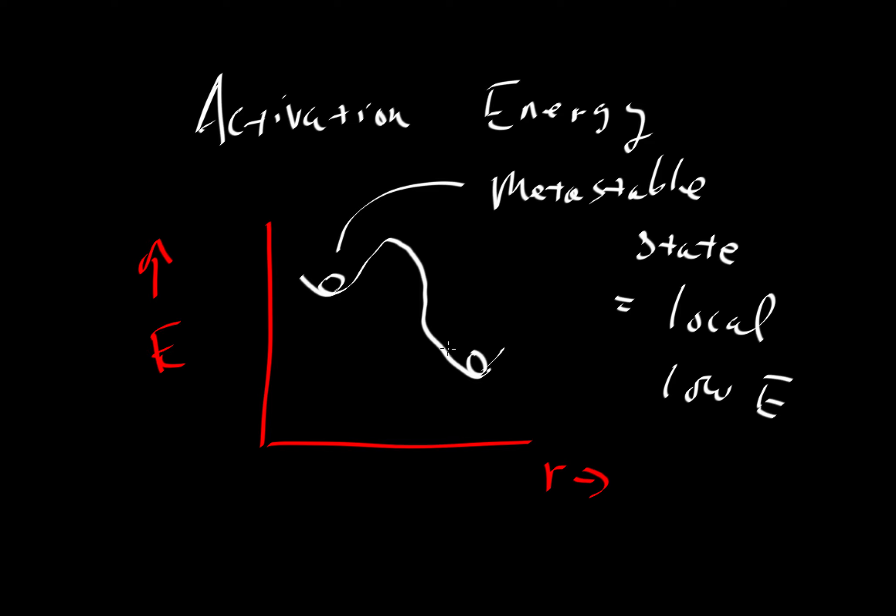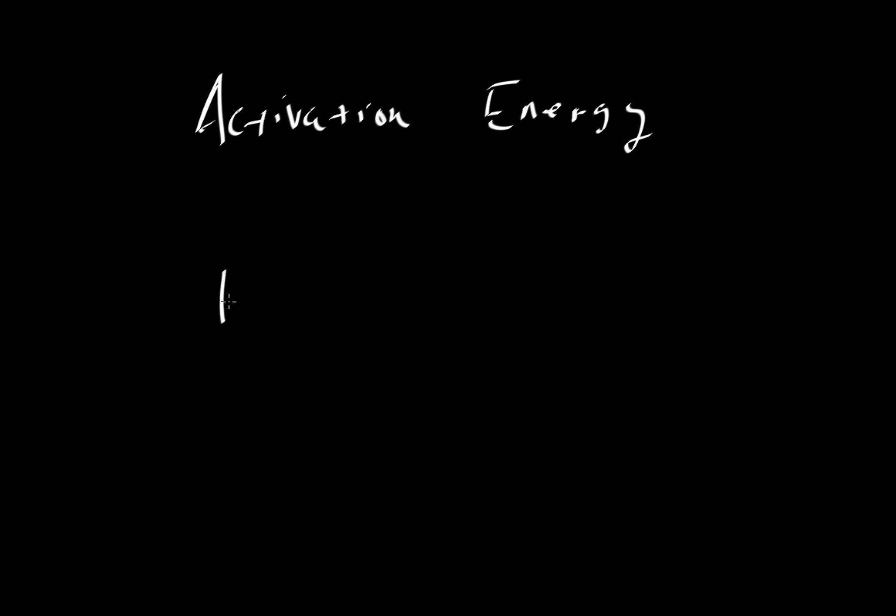This metastable state is an area of local low energy. It's not the lowest energy in the system. If sillimanite can somehow find a way to make its way over that energy barrier, then it will happily transform into kyanite. But here, the way we've drawn this, we've drawn it very specifically to show there can be a little minimum in this energy well, and that energy well can represent this metastable state. That's very important because when we ask questions like, is a system at equilibrium, this is not an easy thing to answer.